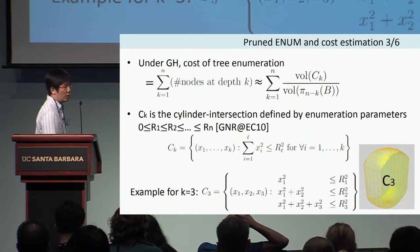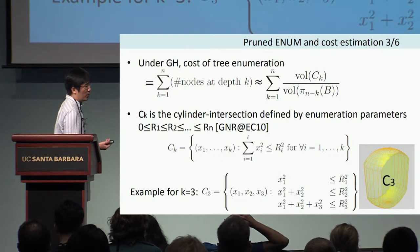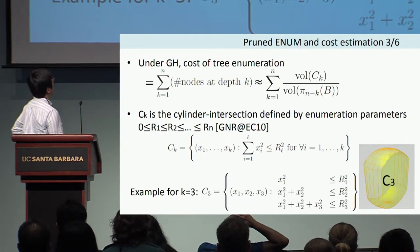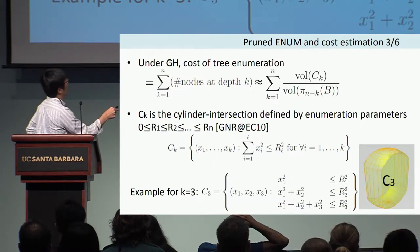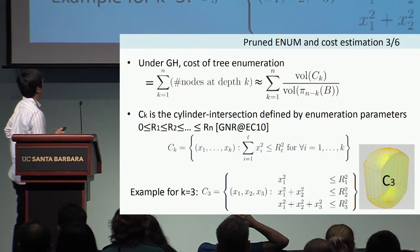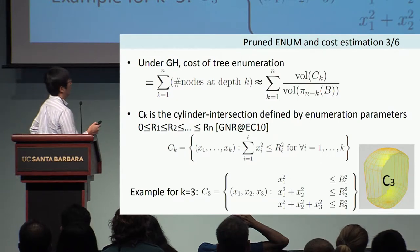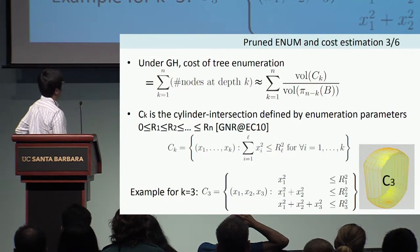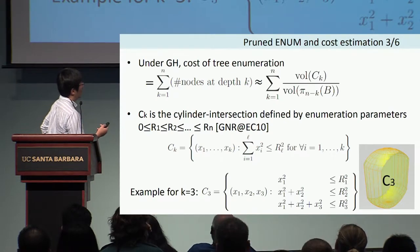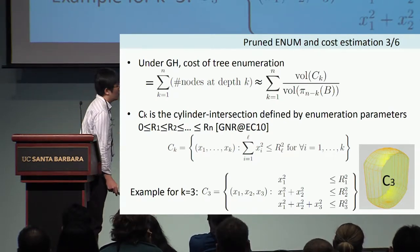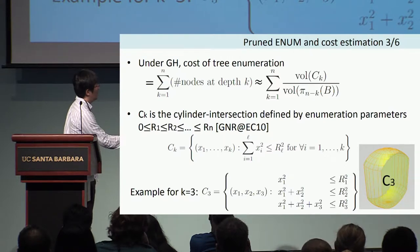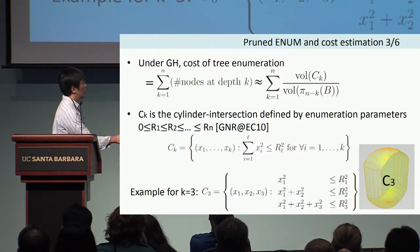Under the Gaussian heuristic, the total cost of the tree enumeration is approximated by the sum of this fraction involving CK, an object defined by Gama, Nguyen, and Regev called the cylinder intersection, formally defined by a specific formula. It is the intersection of k-dimensional cylinders in n-dimensional space, and you can see an example of a three-dimensional cylinder intersection here.